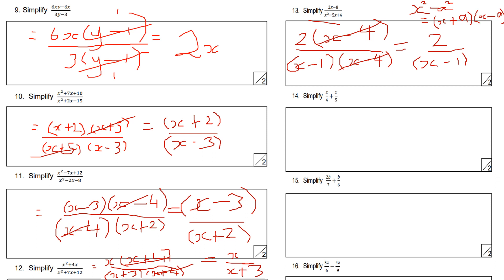Question fourteen: simplify this algebraic fraction by adding fractions. Find a common denominator — 4 times 5 gives 20, the lowest common multiple. 5 times x gives 5x and 4 times x gives 4x. Adding the numerators: 5x plus 4x equals 9x. So the answer is 9x over 20.